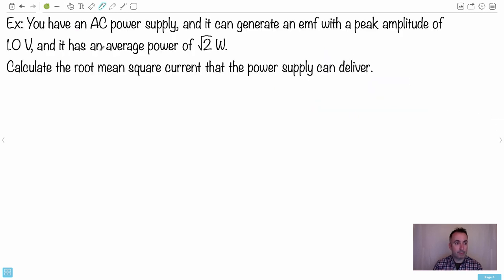Now let's actually do an example. I like this one because it involves a few different things. So you have an AC power supply, alternating current. It can generate an EMF - remember, that's the electromotive force, which is actually a potential difference. It has a peak amplitude of 1.0 volts. Right away before doing anything else, let's try to decode that.